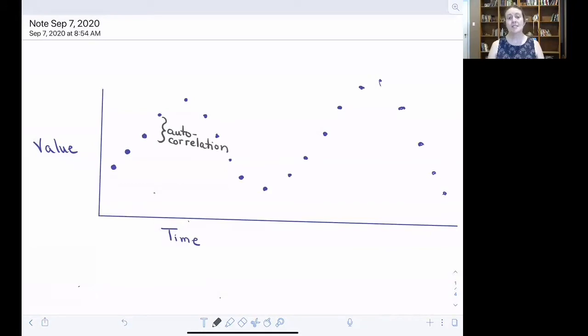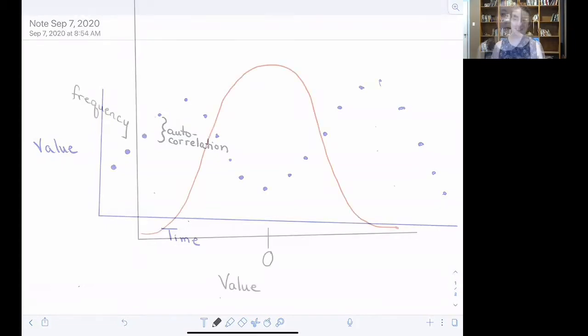What we'll do next is explore this concept of autocorrelation, why it occurs in ecological time series, and a variety of tools to explore its existence in our data and what it may mean for us.